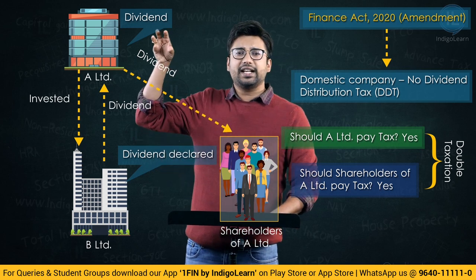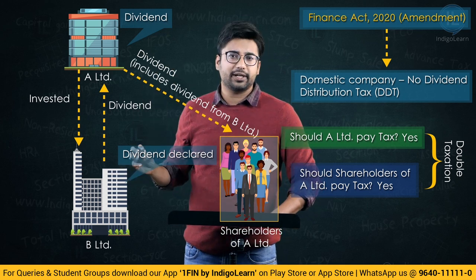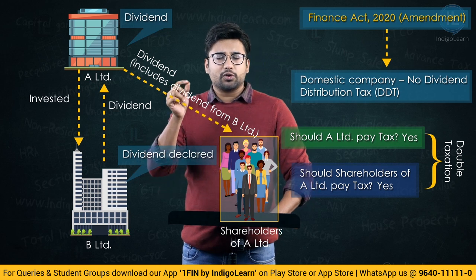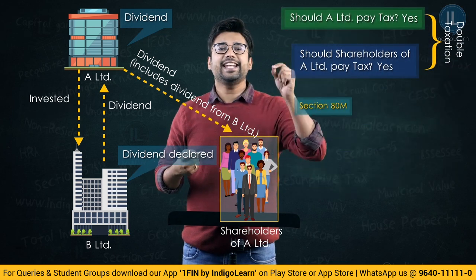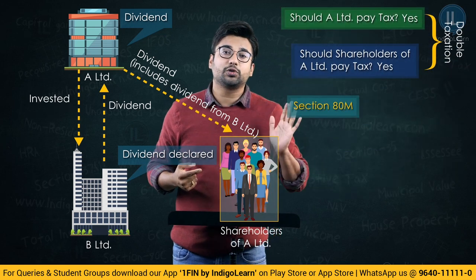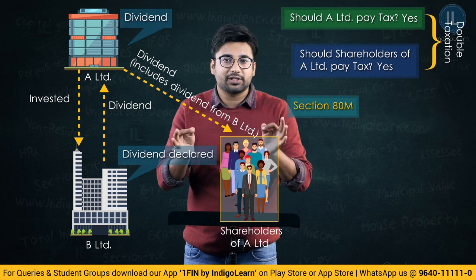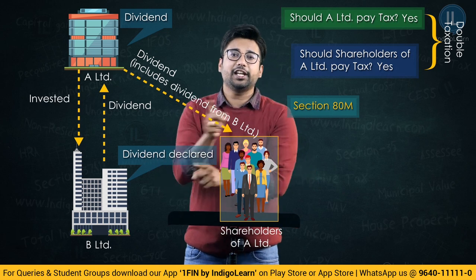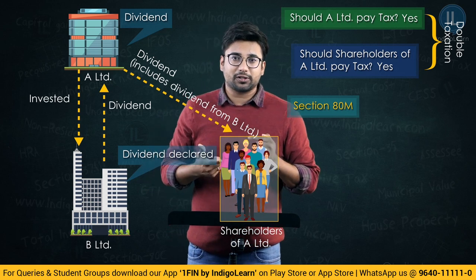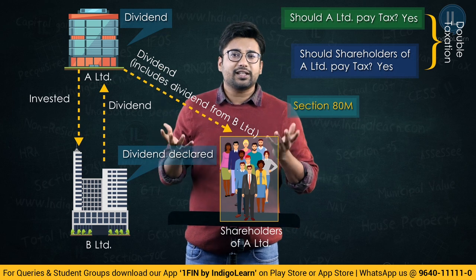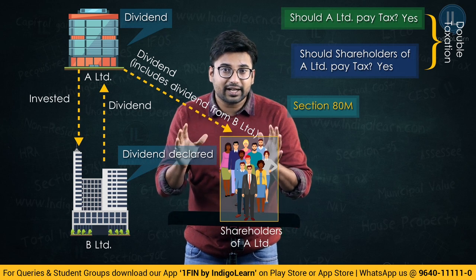Now don't you think there is a double taxation happening? Because the dividend declared by A Limited includes the dividend that it received from B Limited. To ensure that there is no double taxation, ATM — a section that was there prior to 2004, which was then deleted because of the introduction of dividend distribution tax provisions — has now been reintroduced. Dividend is taxed in the hands of the recipient, and because of ATM, let us understand what is happening.